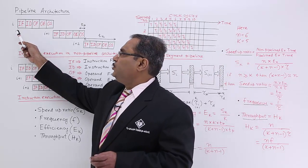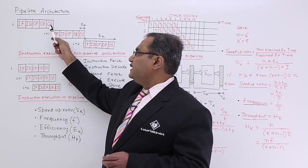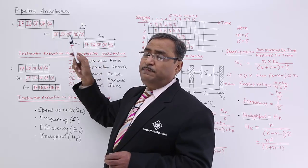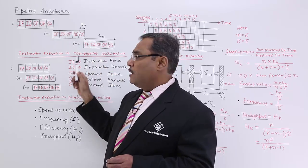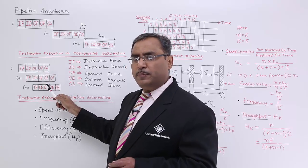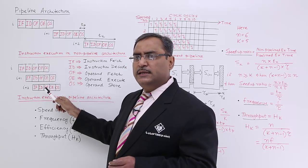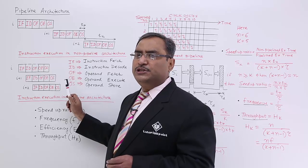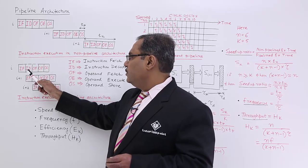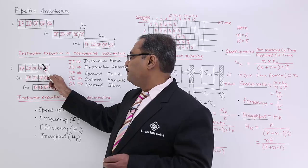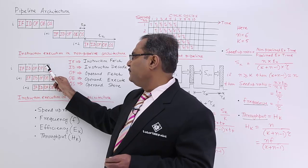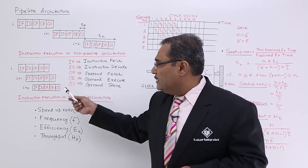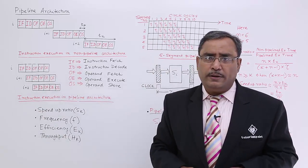How many cycles did the non-pipeline take? 5 cycles into 3 — so 15 cycles, 15 phase durations. But to execute the same 3 instructions in pipeline, how many phase durations were required? Only 7 — only 7 sufficed this particular requirement.